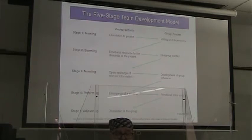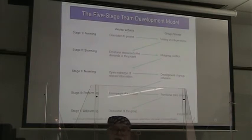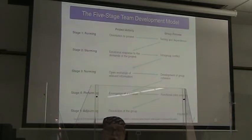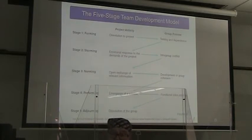Stage two is storming. There may be emotional responses to the demands of the project, and that's fine. We want to try and work out as much of the intergroup conflict as we can at that time. It's very rare that we put together a team and there's never any kind of conflict or interpersonal issues. Stage three is norming — in that stage we're having exchange of relevant information and starting to develop group cohesion.